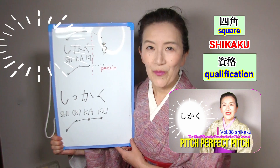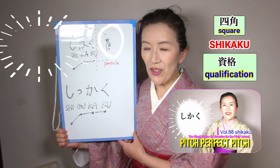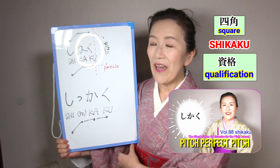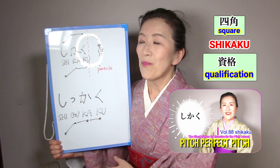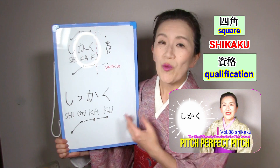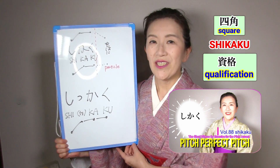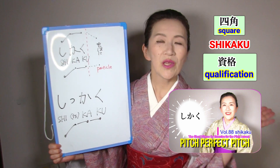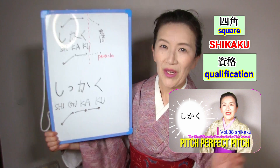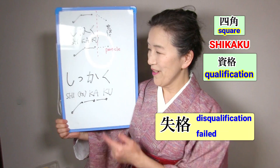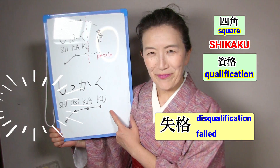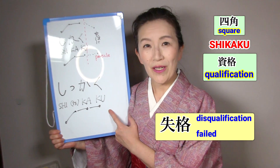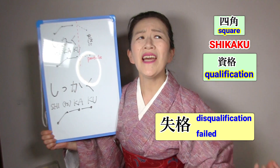In the last video, we learned how to pronounce shikaku. They have the same sound, but when we add particles, we can understand the differences. Please watch this video. Here, we will look at shikkaku — disqualification, or failed.